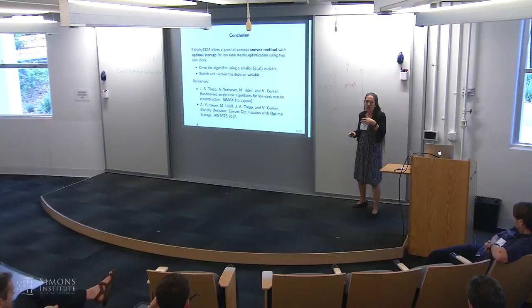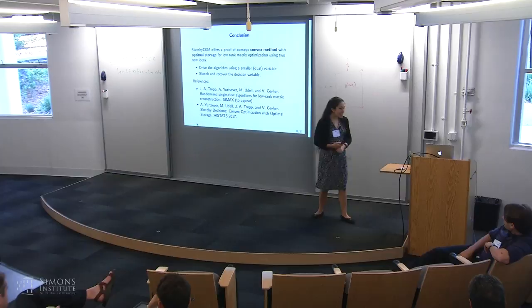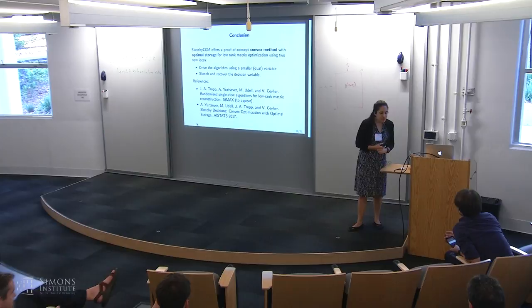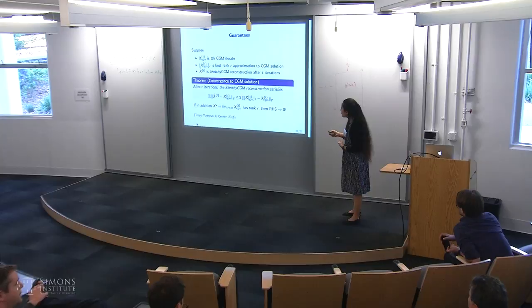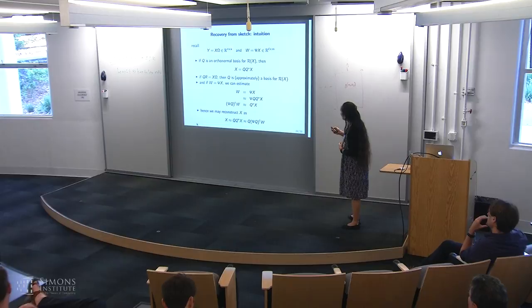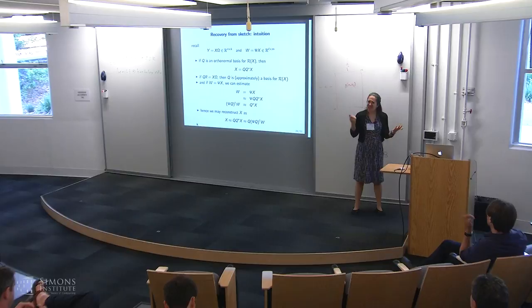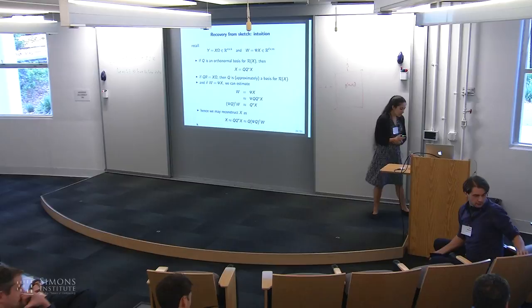Another question: how does storage depend on the target approximation accuracy? Answer: to make the factor of 2 become 1+epsilon, the sketch dimensions k and l need to increase — something like 1/epsilon² dependence — but for this application, a factor of 2 is good enough.